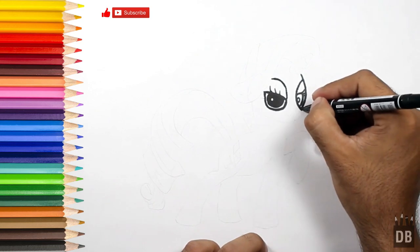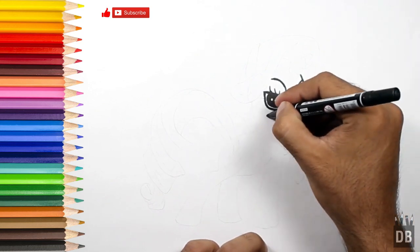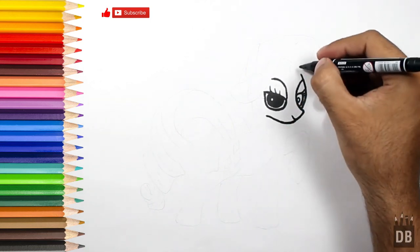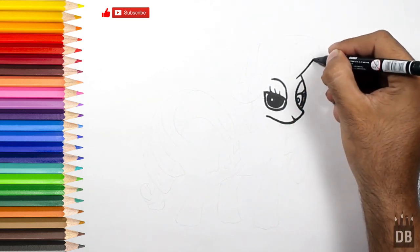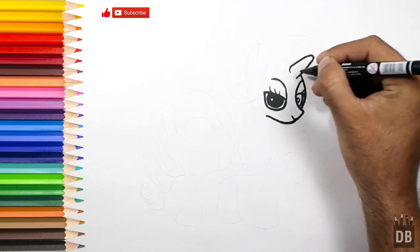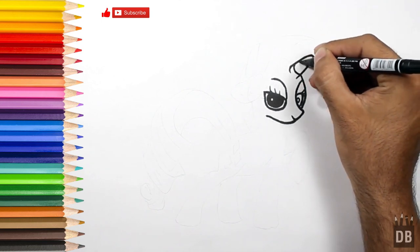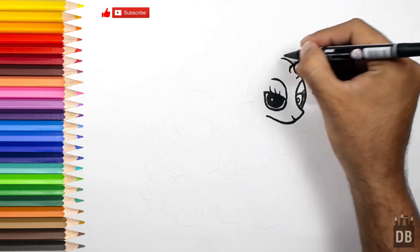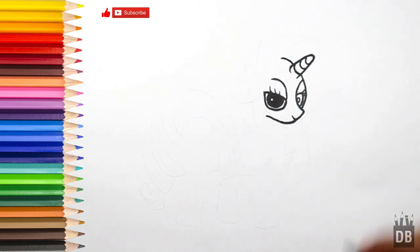From here we will make his smile and his face outline, and there come his horn. Make curved lines like this. From here we will make his hair.